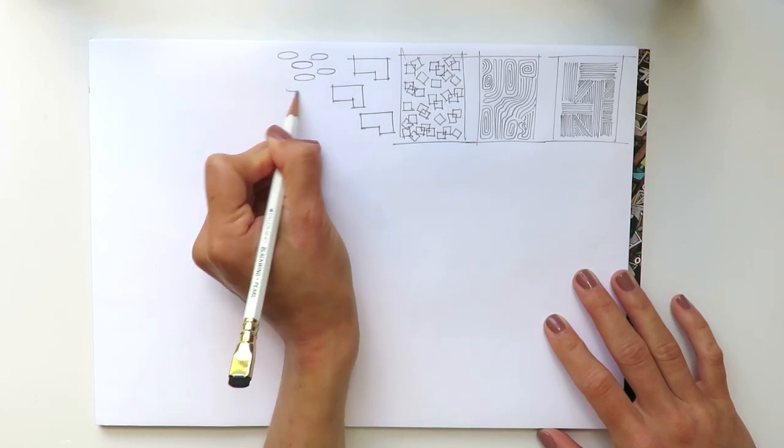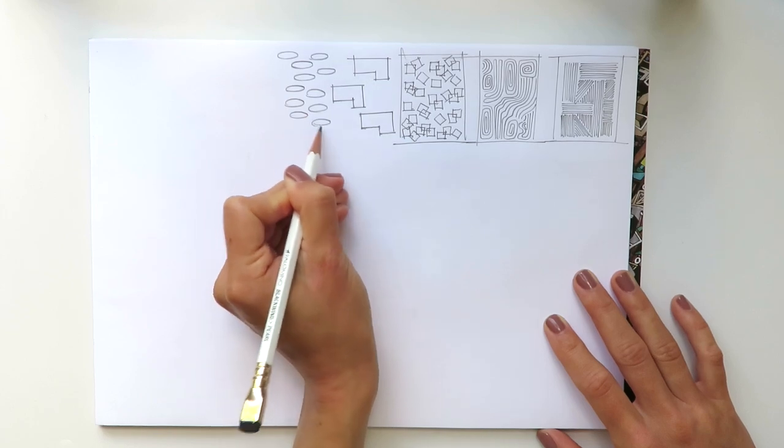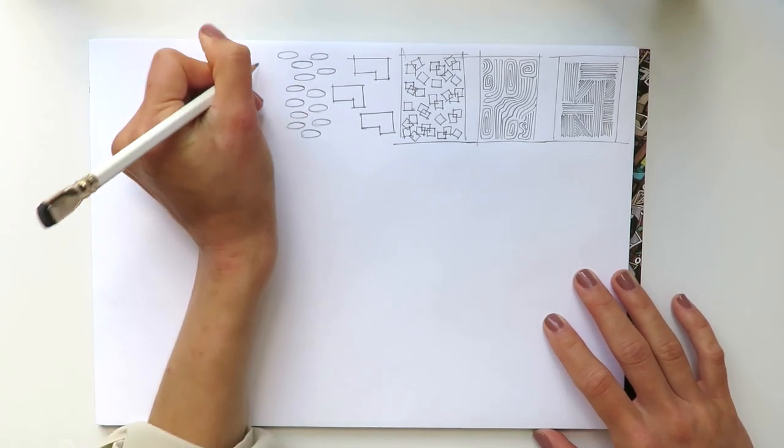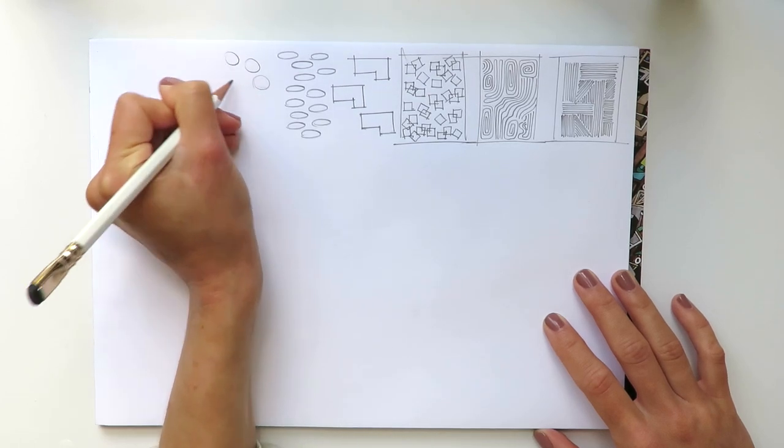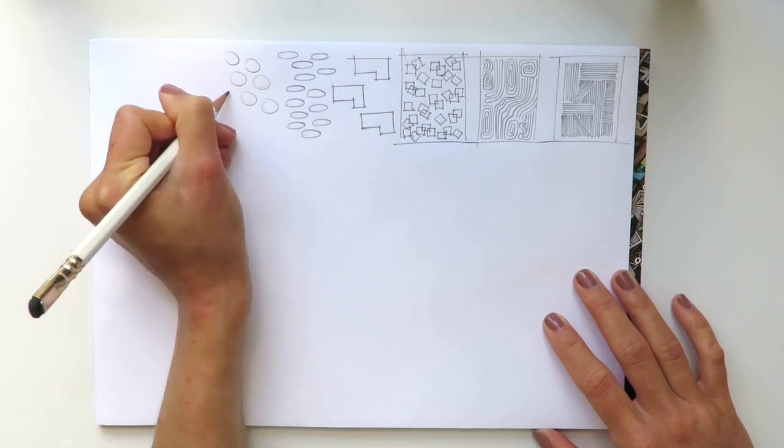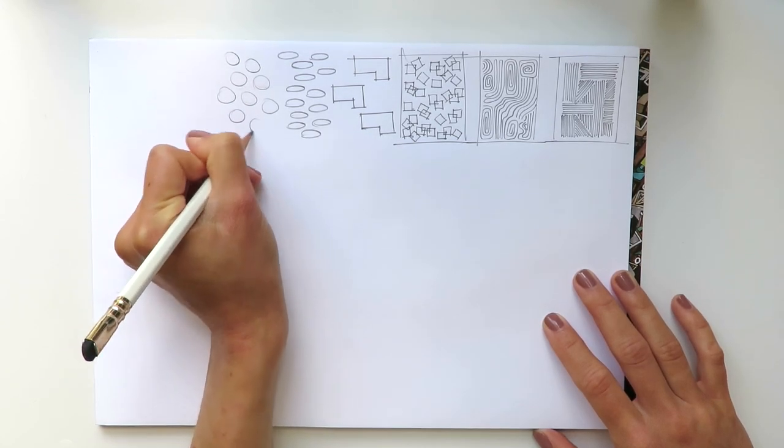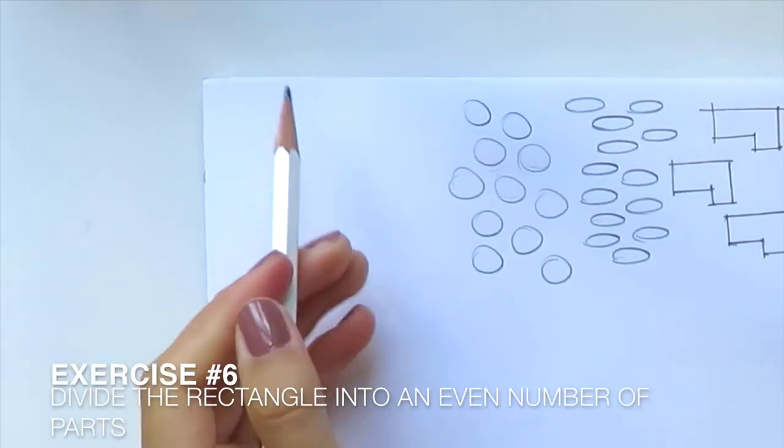So here we want to create many, many ovals as fast as possible, and once again we want to keep the same size of them. And in addition to this exercise, like exercise five plus, is circles. So we want to make a lot of circles and keep their size alike.